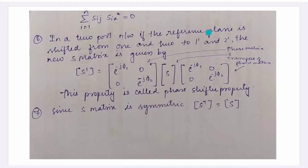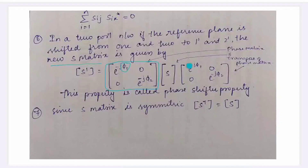In a two-port network, if the reference plane is shifted from port 1 and 2 to port 1-dash and 2-dash, a new S-matrix is given. The transpose of the phase matrix gives us S-transpose equal to S, which confirms it is symmetric.